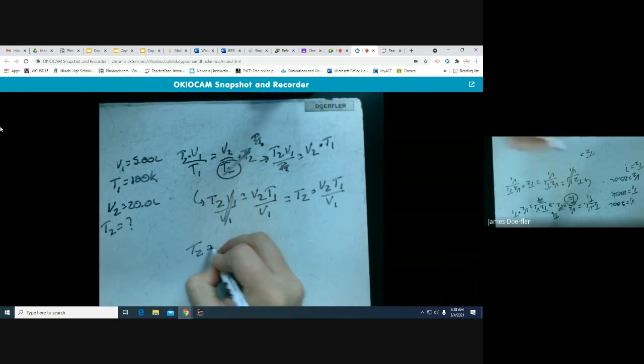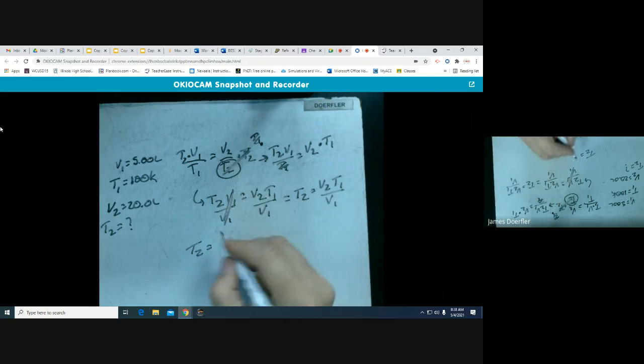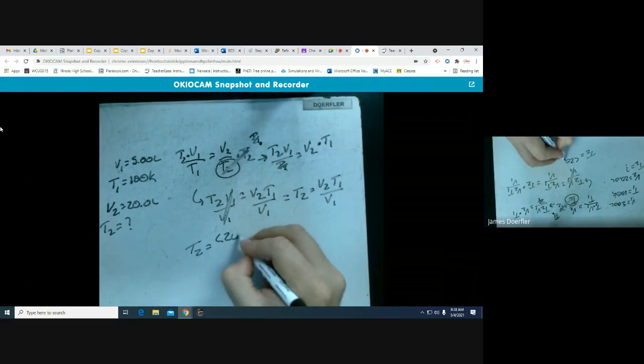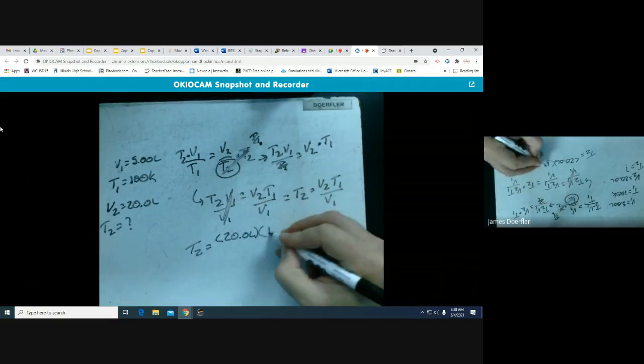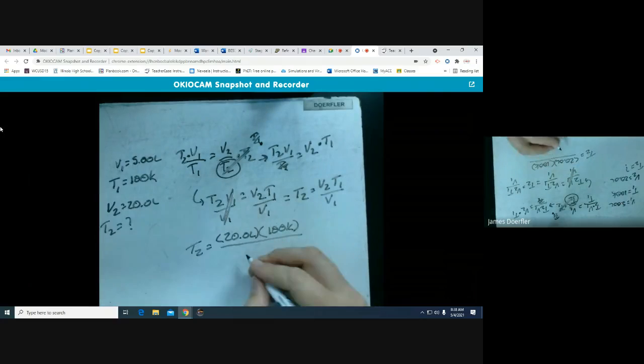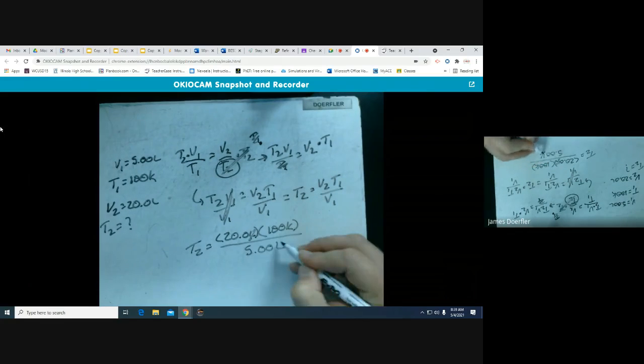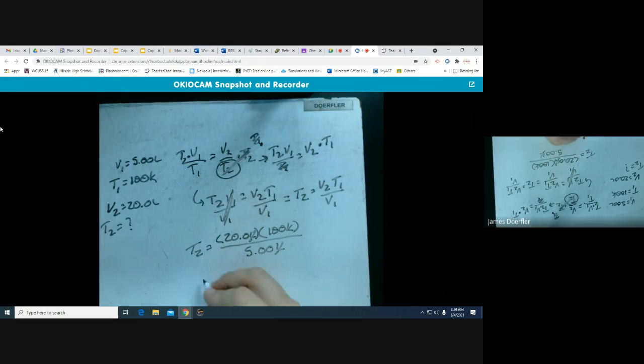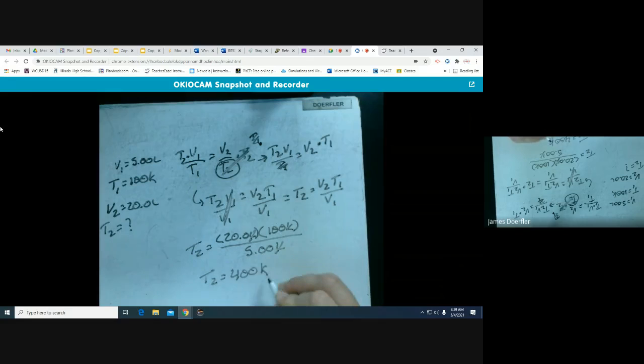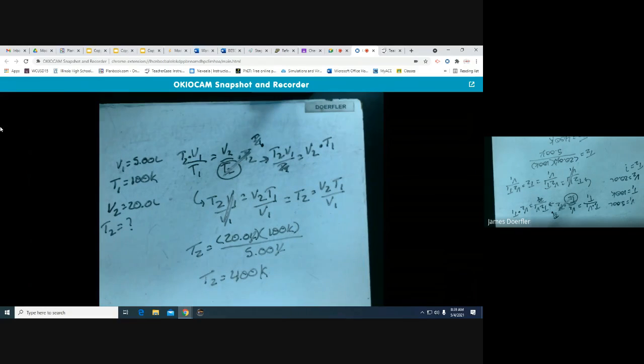Now I've got my T2 set up and getting ready to solve for. I just plug in my values: V2 which is 20.0 liters, times T1 which is 100 Kelvin, divided by V1 which was 5 liters. This time the liters unit cancels out. Plugging that in, you should get 400 Kelvin. I just wanted to do a couple of practice problems with this. Hold on to this because number four is what we'll do tomorrow after we've completed section four.